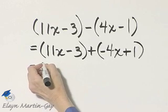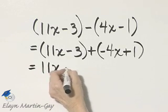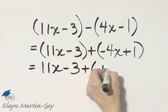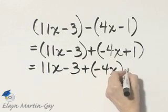Now that I'm adding, I'm going to go ahead now and take off parentheses. So that's 11x minus 3 and then plus a negative 4x and plus 1.